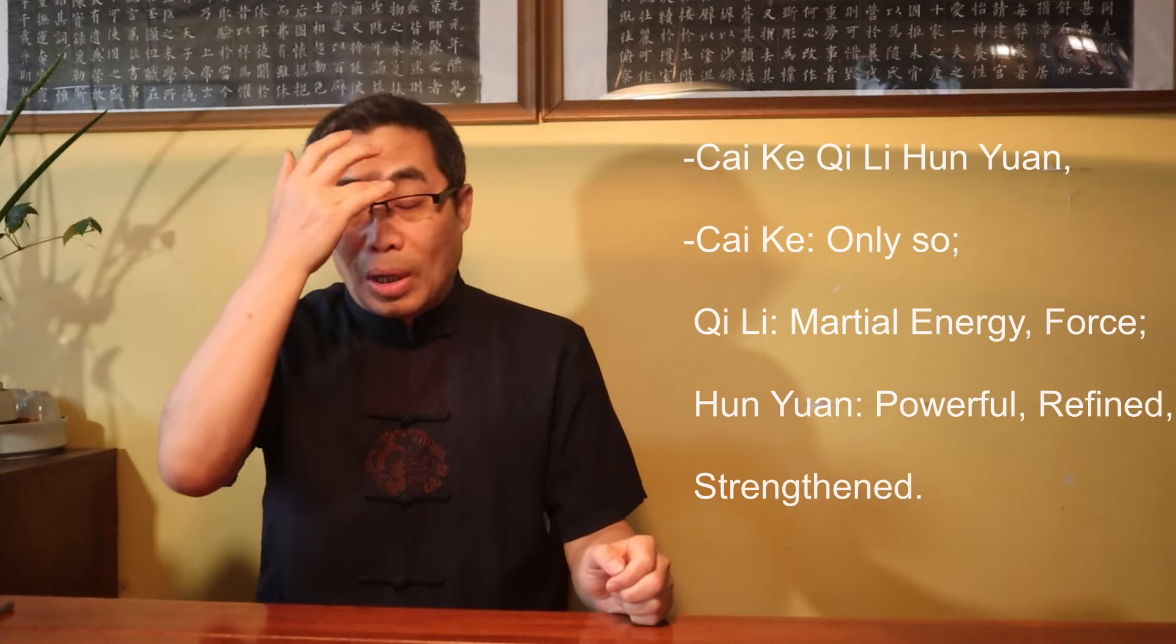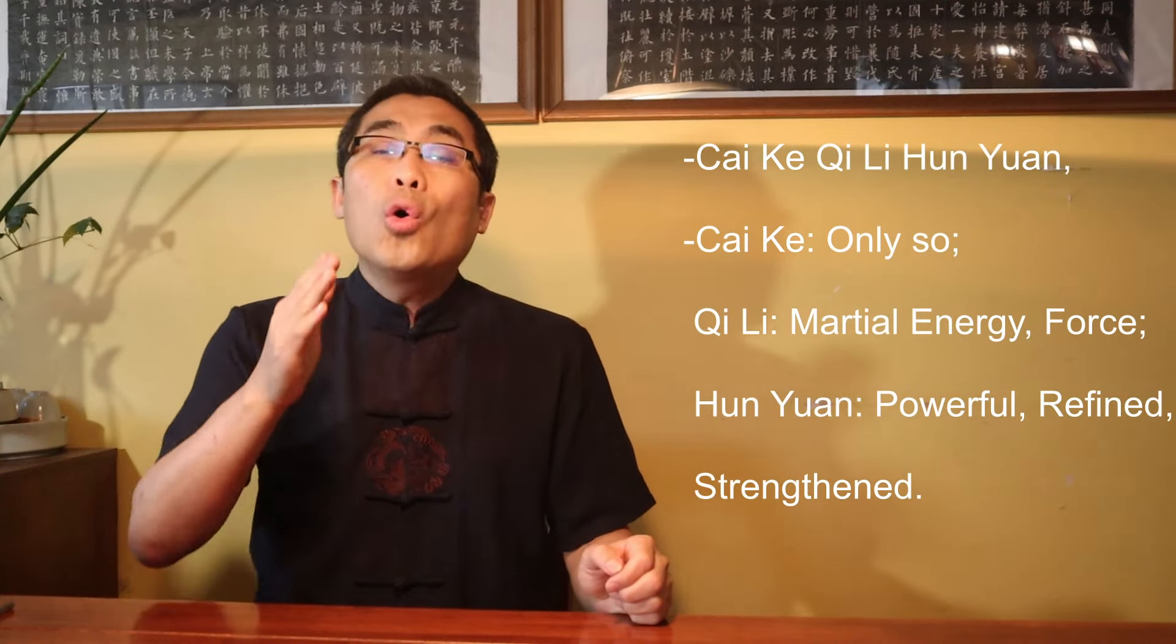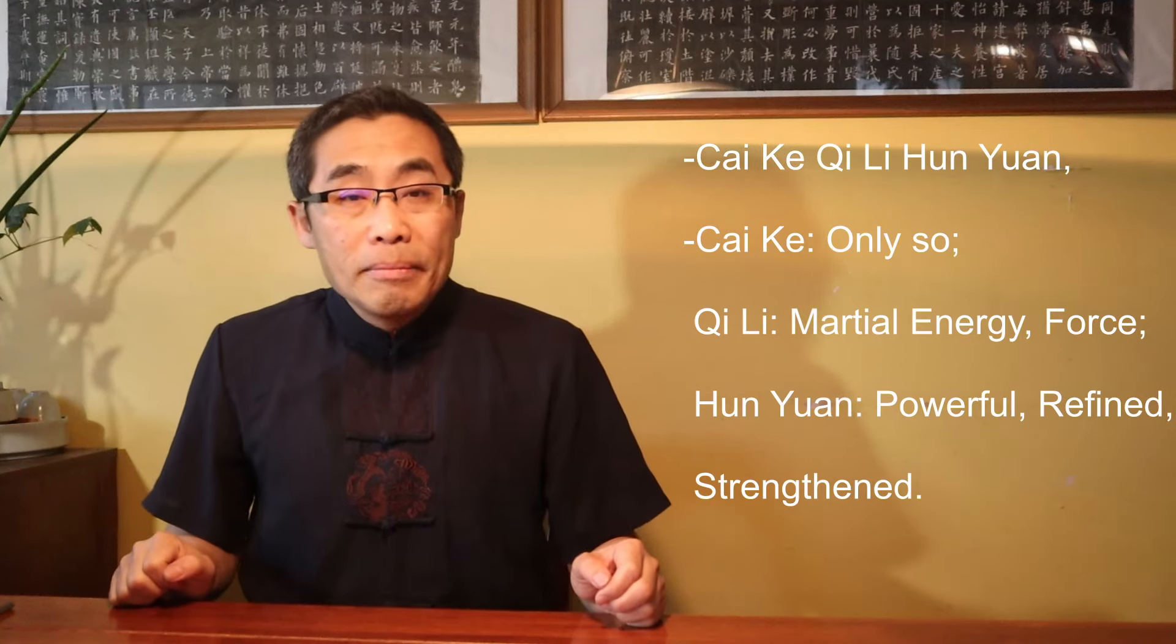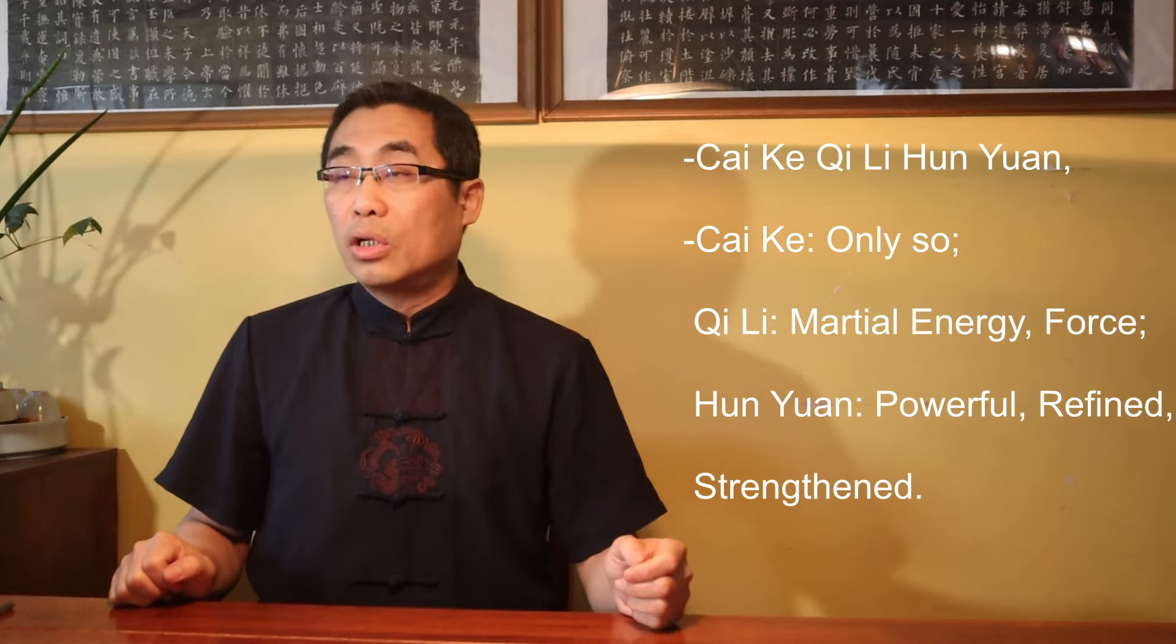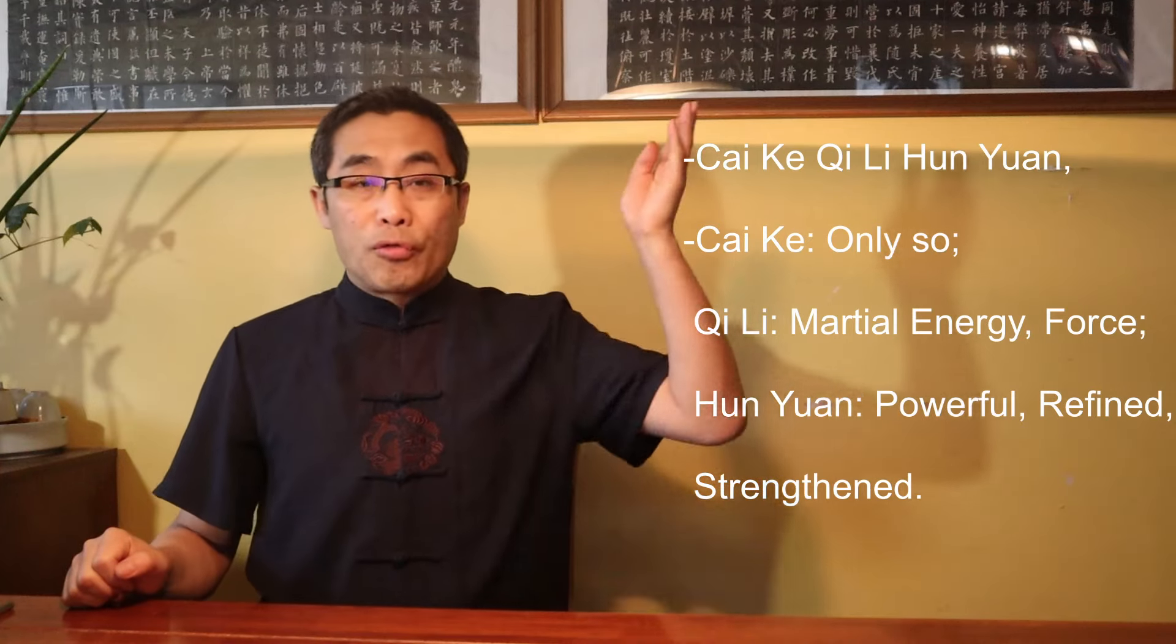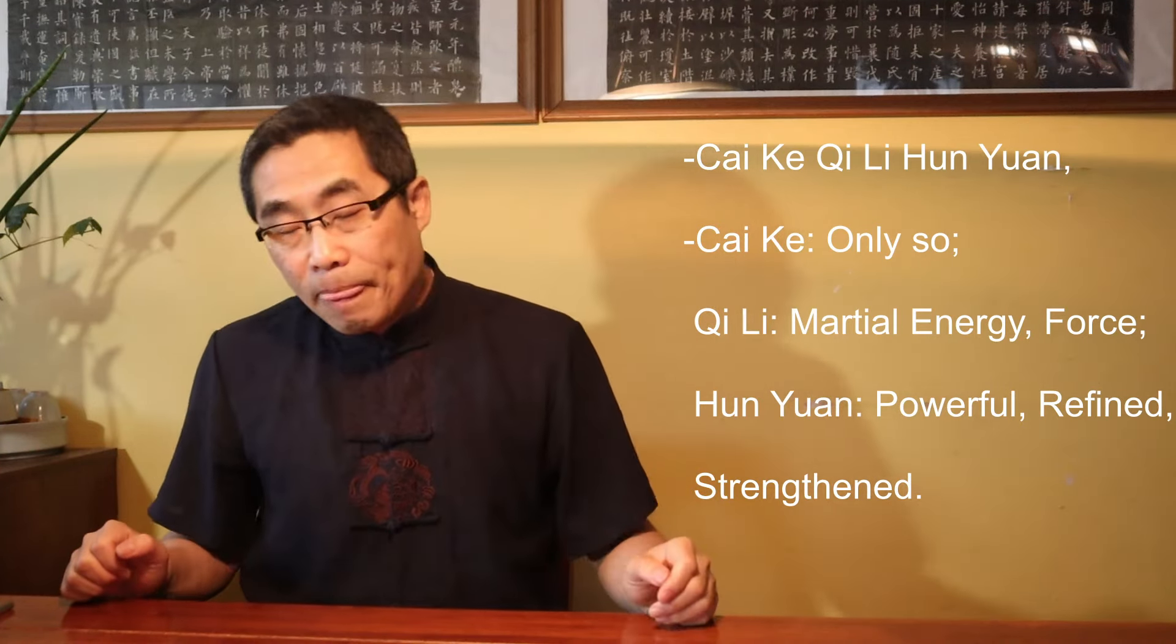The third and final sentence, Cai Ke Qi Li Hun Yuan. Cai Ke means only so. Qi Li means martial energy and force. Hun Yuan means powerful, refined, strengthened. Put together, it means martial energy will become powerful in a refined way, which is the result of following the principle of elbow extending outward while upper back releases martial energy forward-upward.